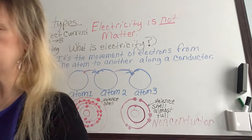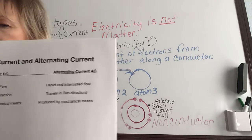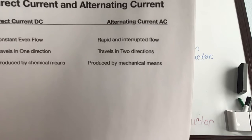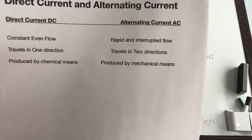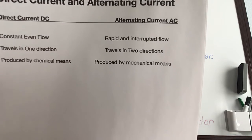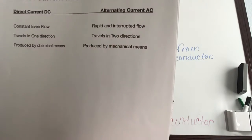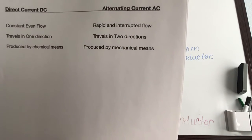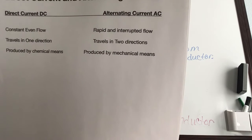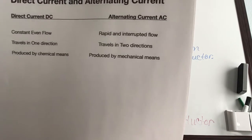Looking at the difference between direct current and alternating current: direct current is the constant, even flow that travels in one direction and is produced by chemical means. Alternating current is the rapid and interrupted flow — it travels in two directions and is produced by mechanical means.